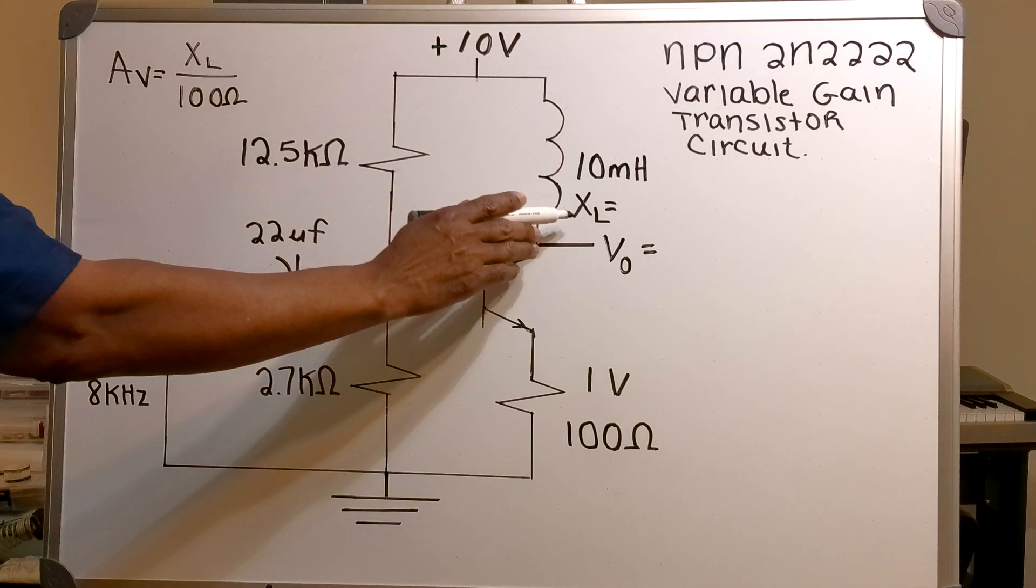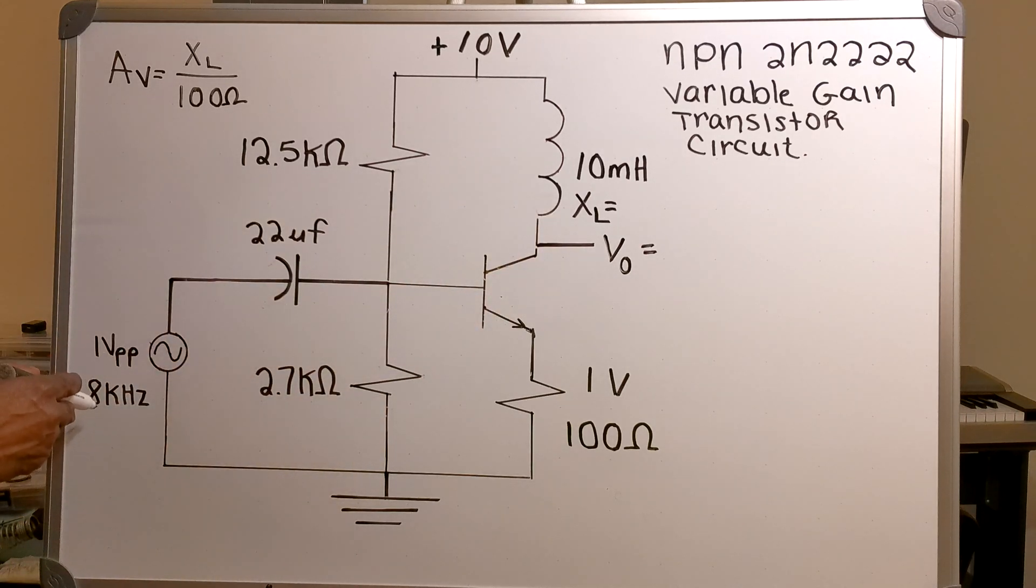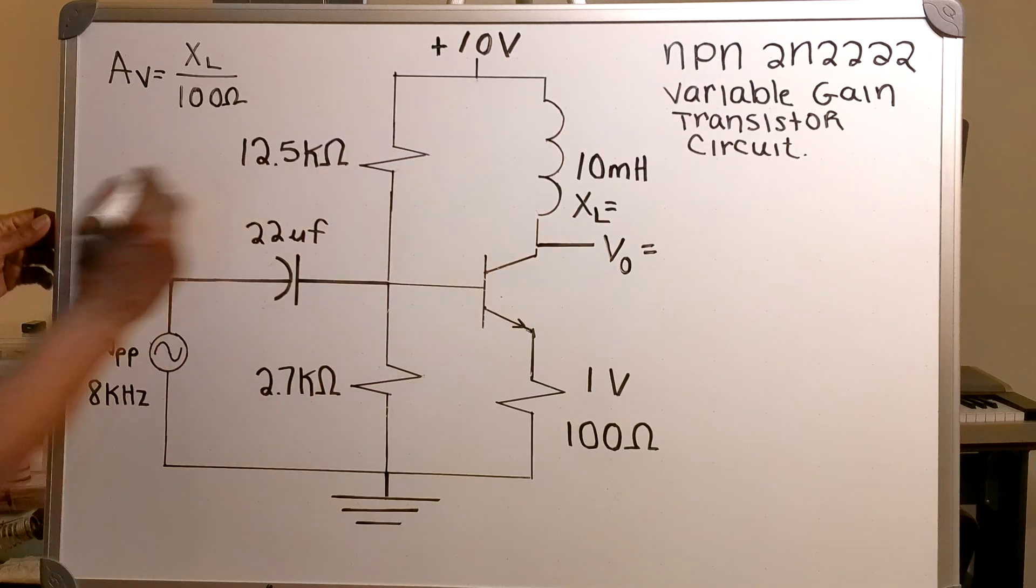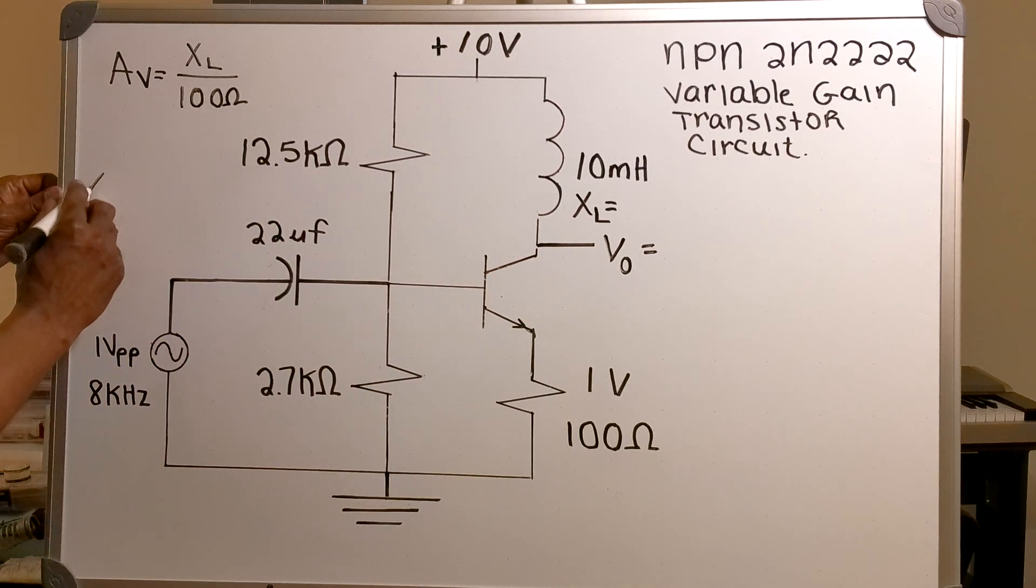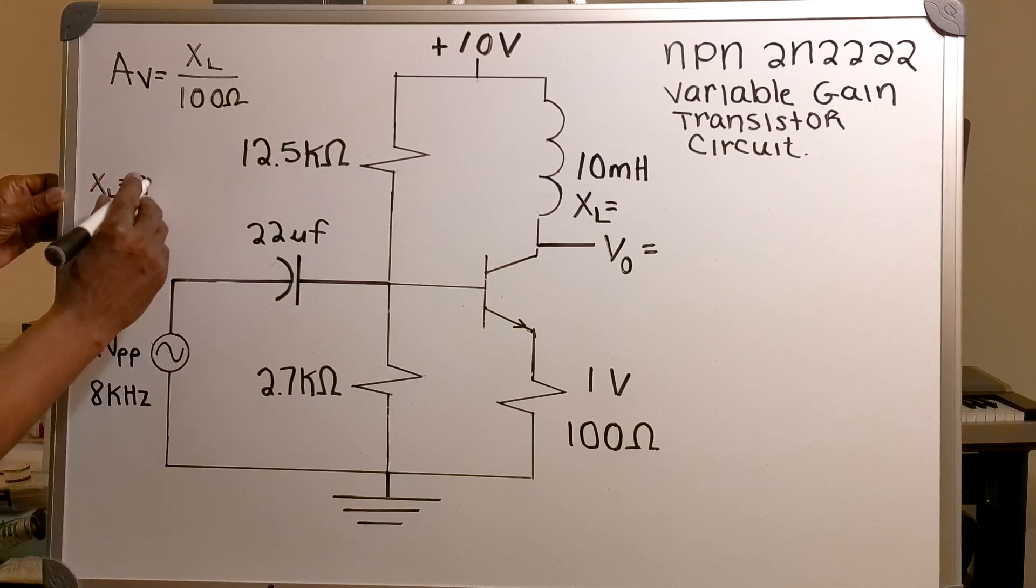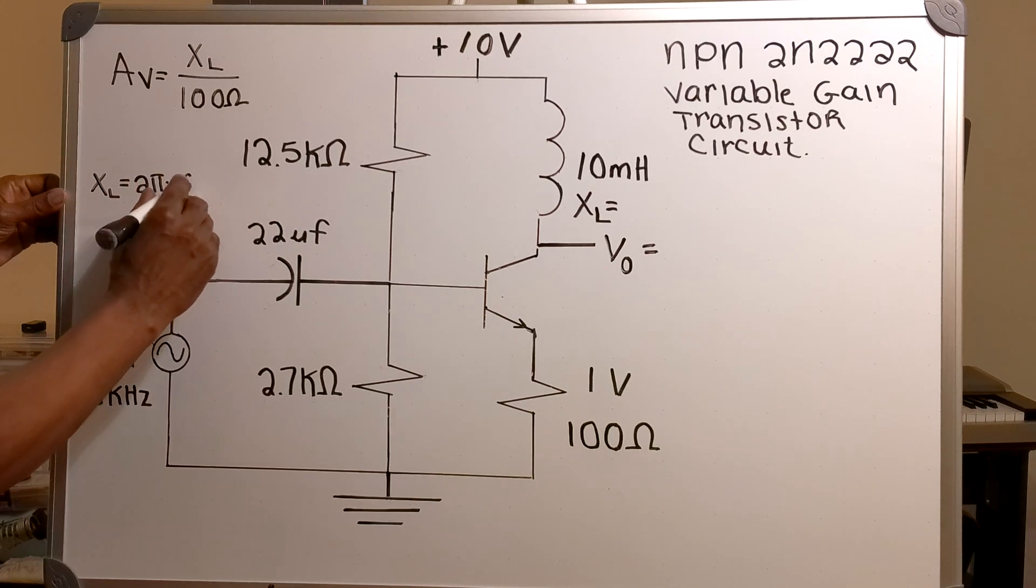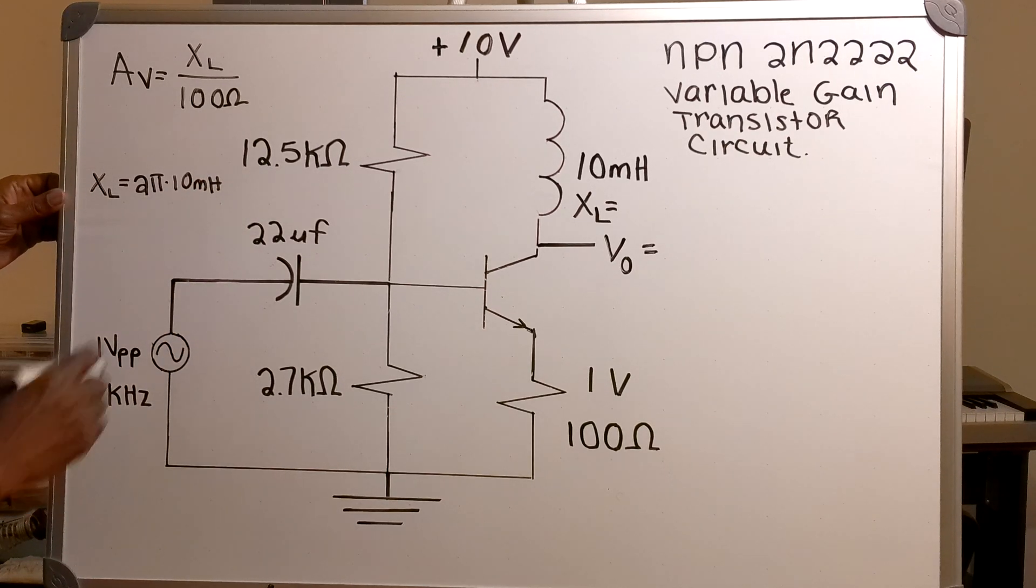Now the inductive reactance is determined by the frequency. So the XL equals 2 pi times the inductance of 10 mH times the frequency of 8 kilohertz.